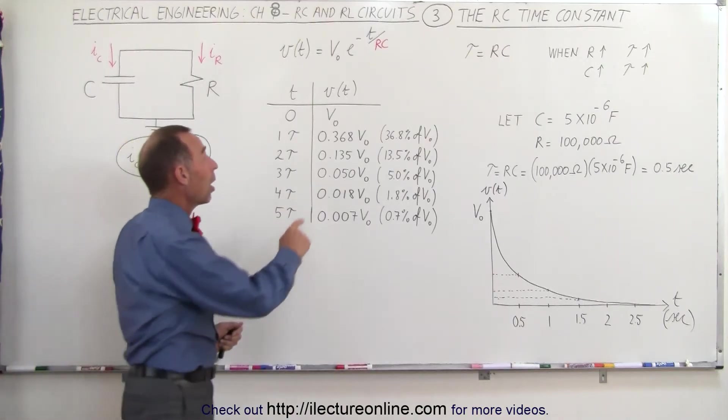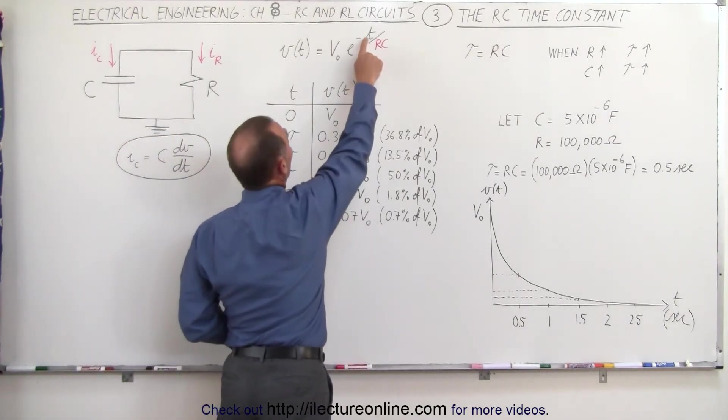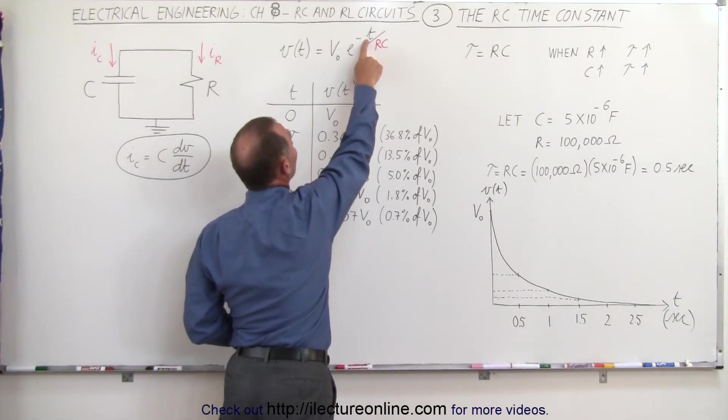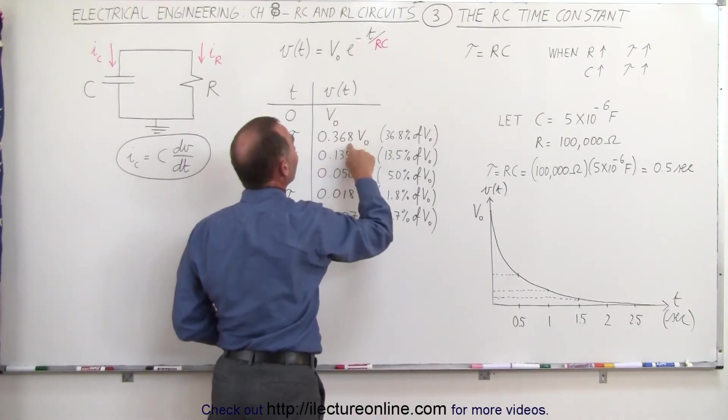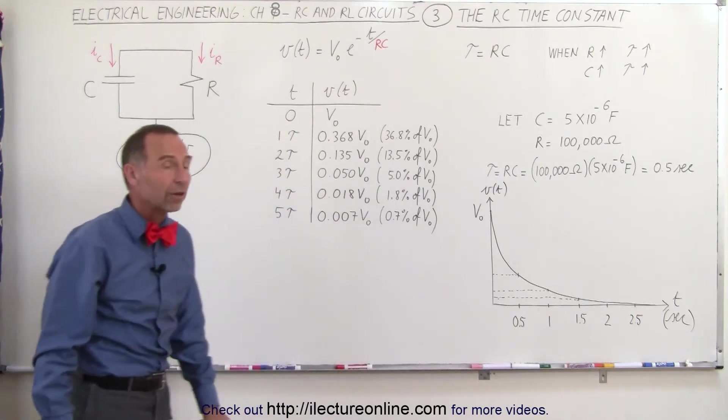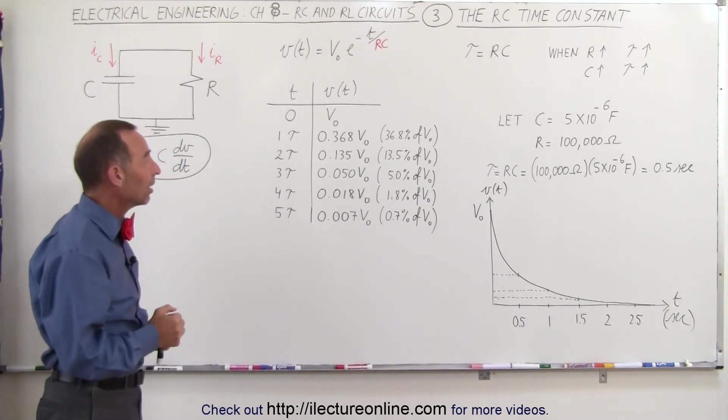How do we figure that out? All we have to do is plug in one tau, or one RC, in for time. We get e to the minus one. E to the minus one is 0.368, and that's how we get the voltage across the capacitor after one time constant.